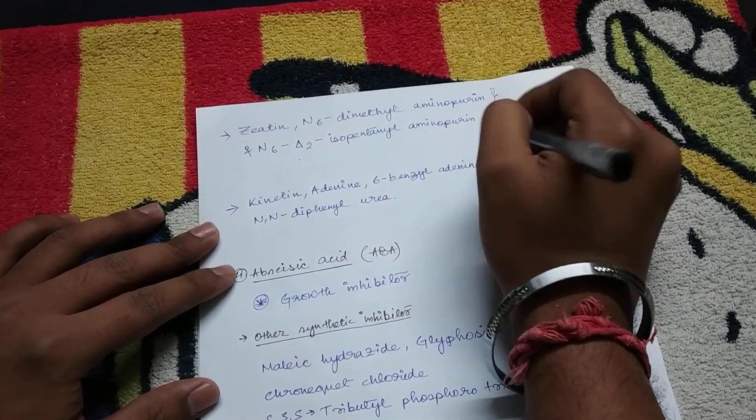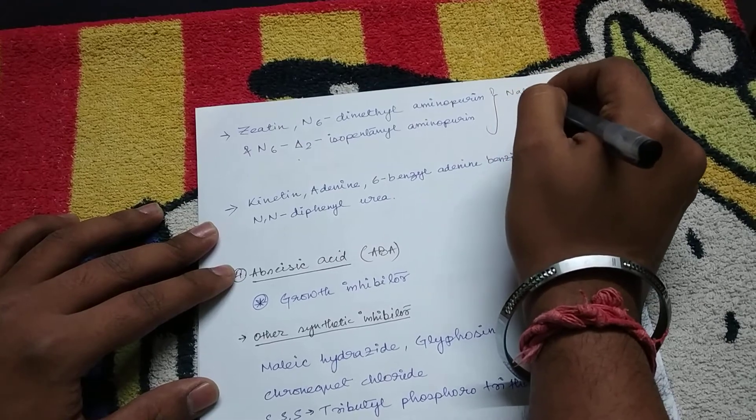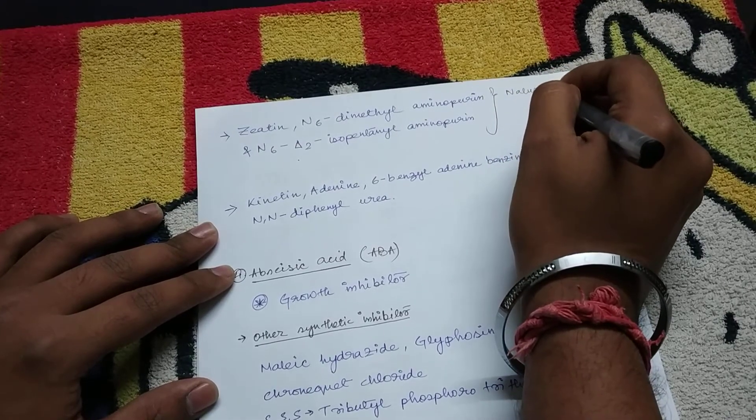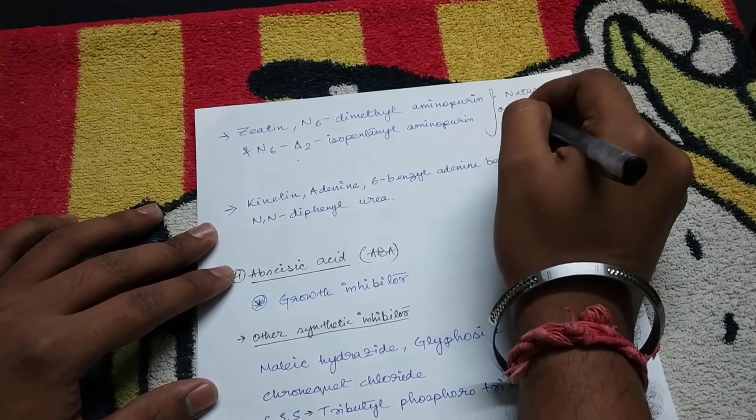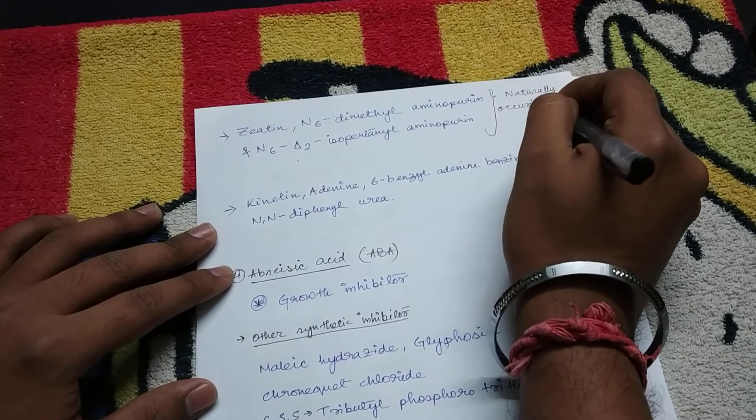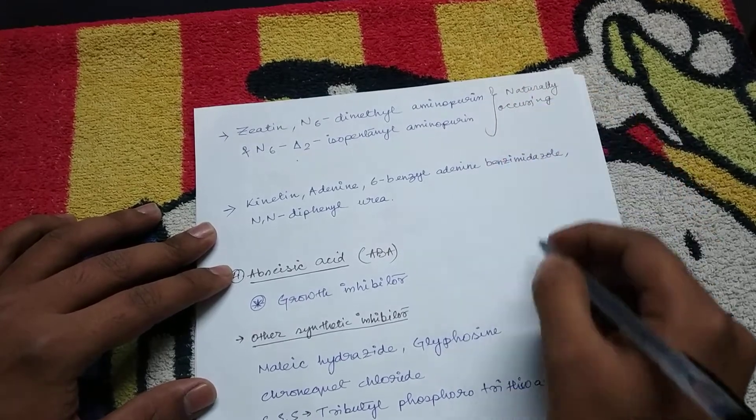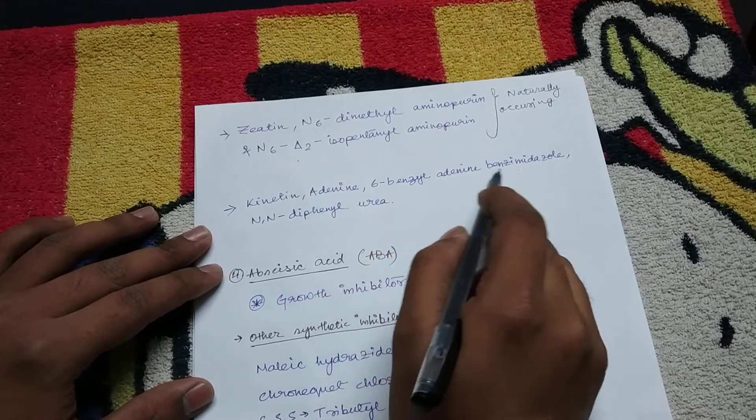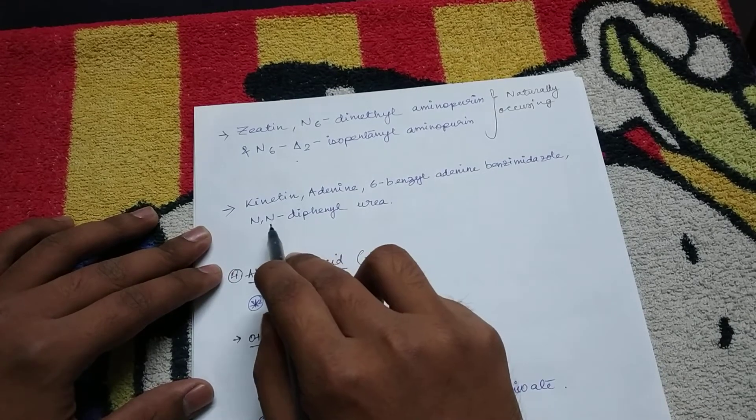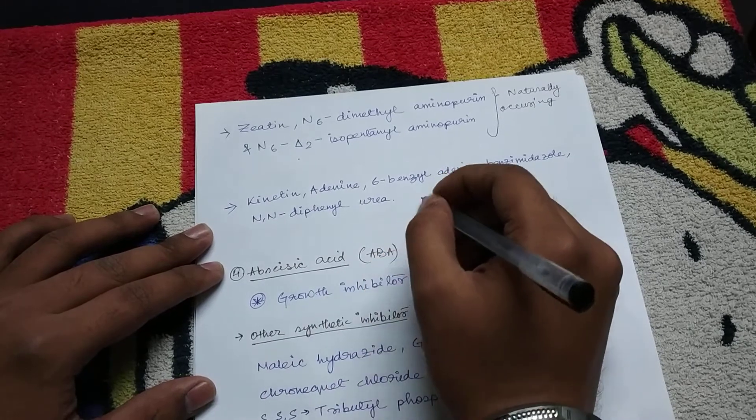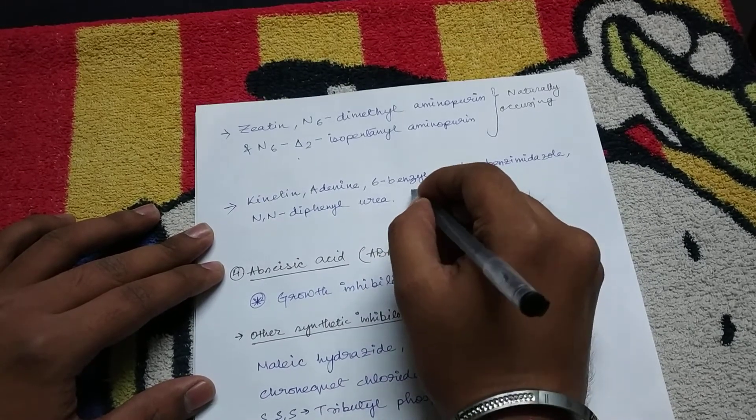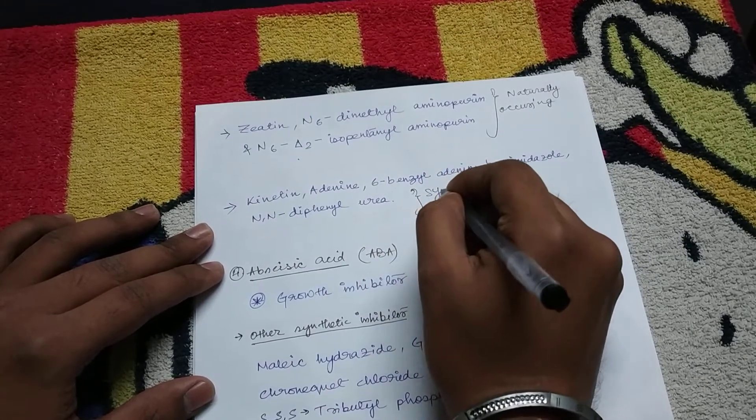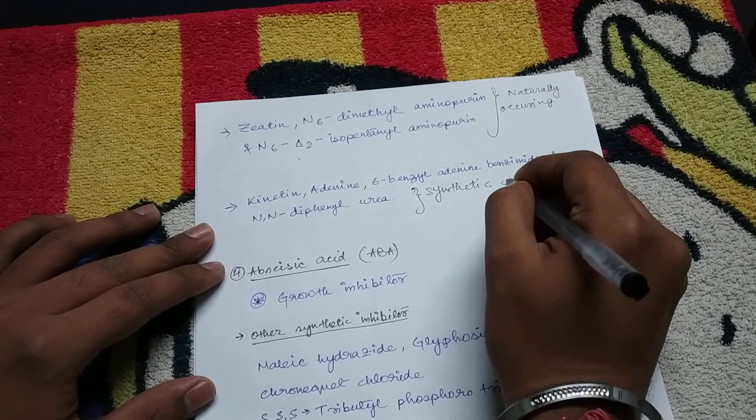And kinetin, adenine, 6-benzyl adenine, benzemidazole, and N,N-diphenyl urea are examples of synthetic cytokinins.